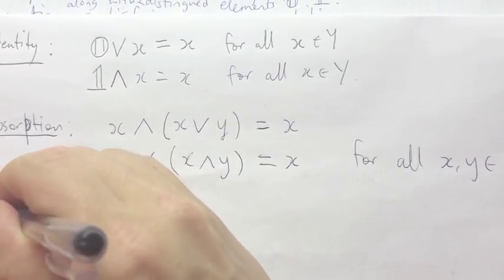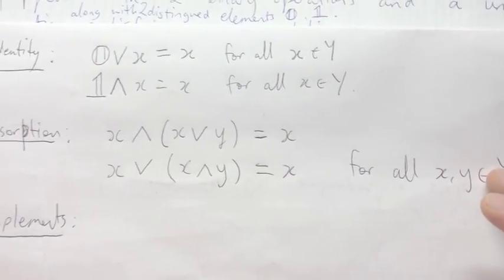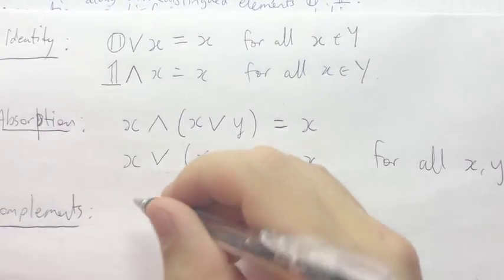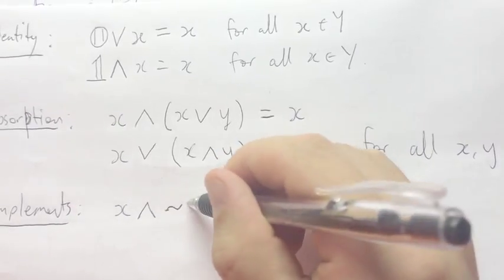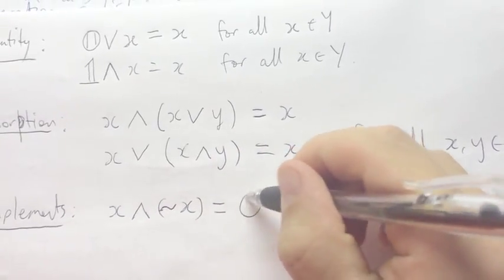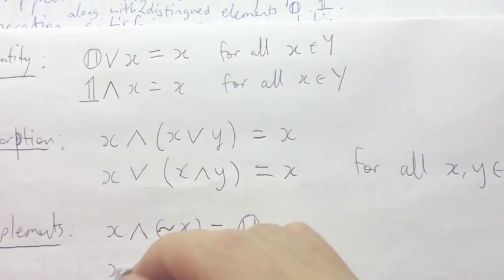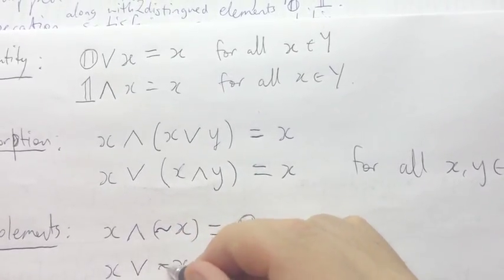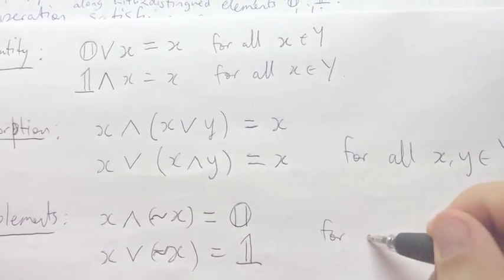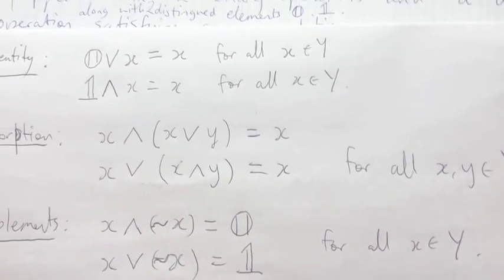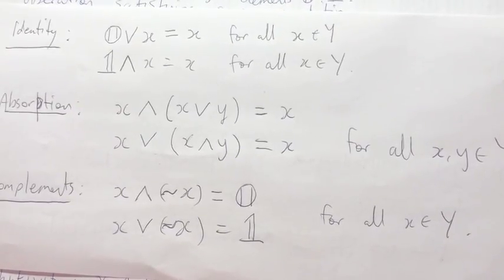And the last condition is complements — if you wedge x with tilde x, you get the distinguished element zero. Those are all the conditions that a Boolean algebra needs to satisfy.